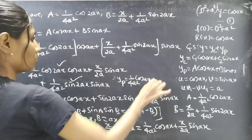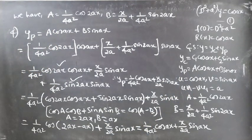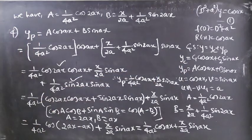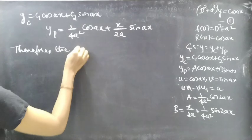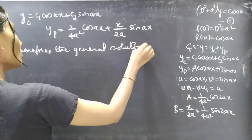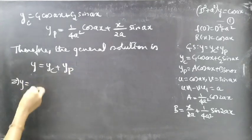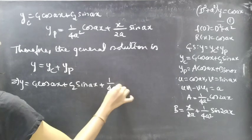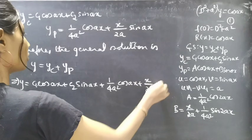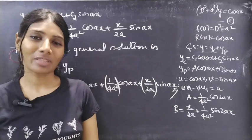Therefore yp equals 1/(4a squared) cos ax plus x/(2a) sin ax. The general solution is y equals yc plus yp, giving y equals c1 cos ax plus c2 sin ax plus 1/(4a squared) cos ax plus x/(2a) sin ax. This completes the problem. I hope you understand; we'll see you in the next video.